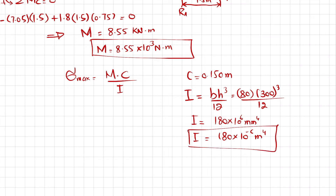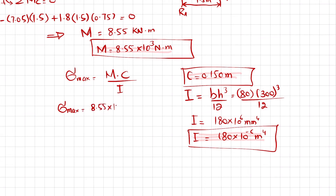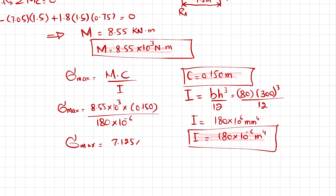We now have all three values: M = 8.55 × 10³ N·m, c = 0.150 m, and I = 180 × 10⁻⁶ m⁴. Substituting into sigma_max = Mc/I: sigma_max = (8.55 × 10³ × 0.150) / (180 × 10⁻⁶) = 7.125 × 10⁶ Pa.